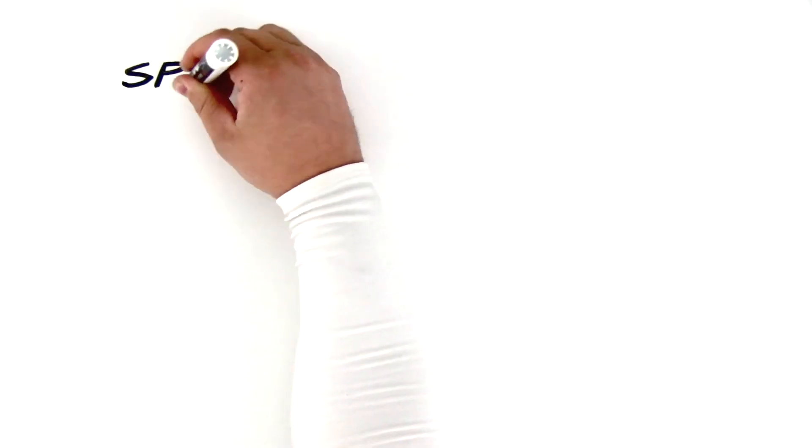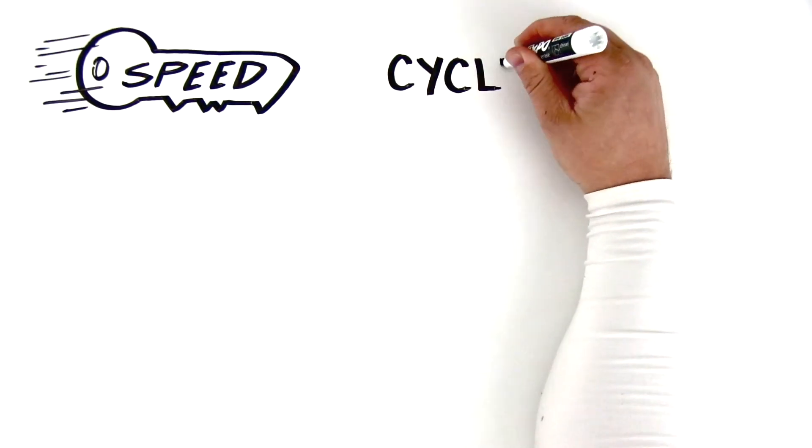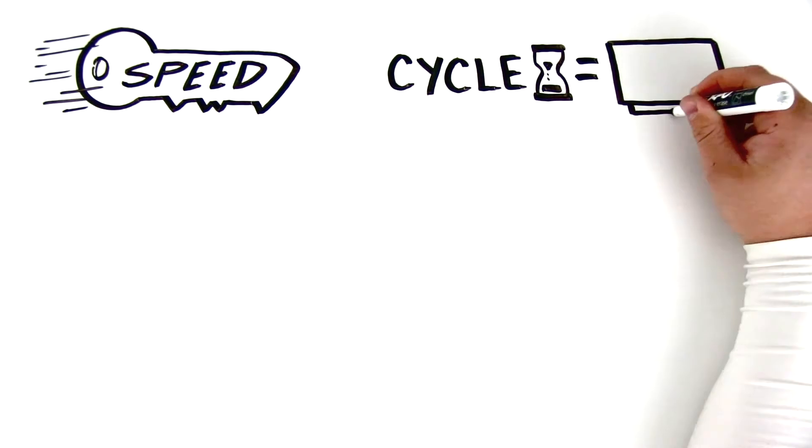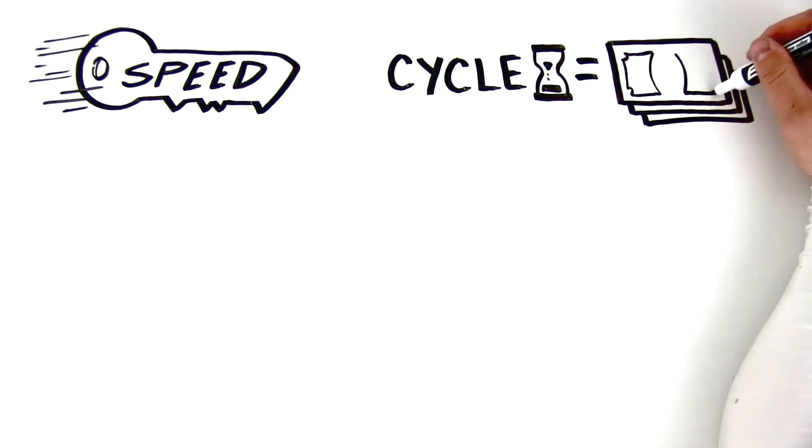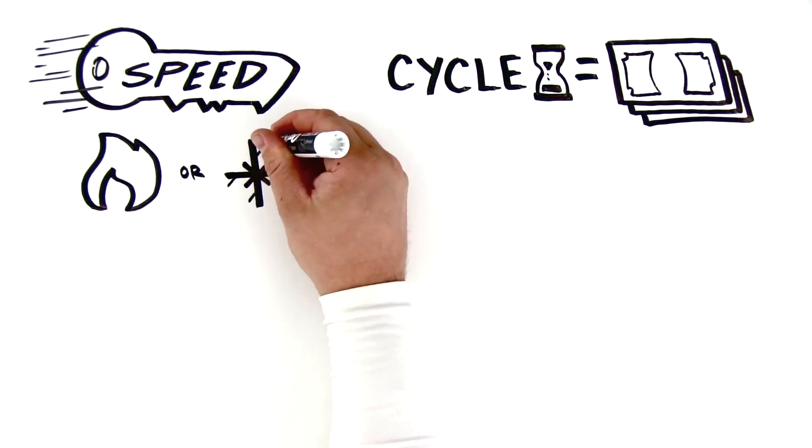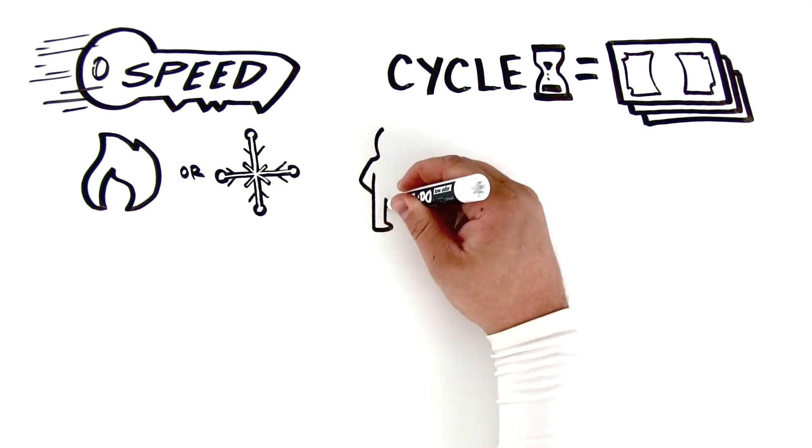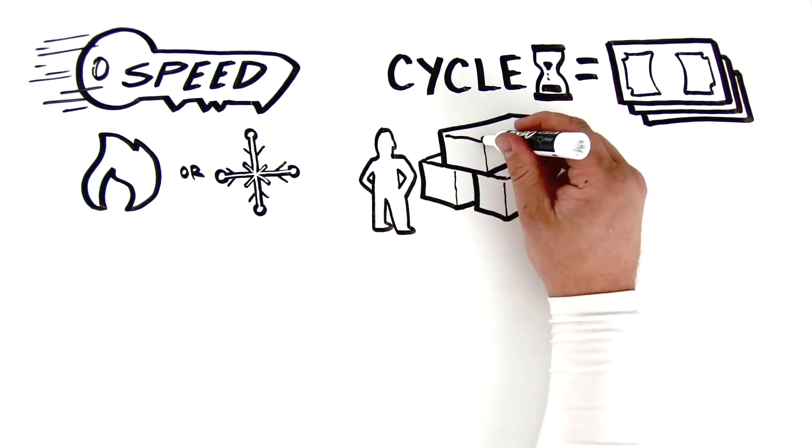In manufacturing, speed is key, and since the cycle time largely determines how cost-effective your final part is going to be, it matters which die casting process you will need to use, which starts with choosing the right alloy for the project.